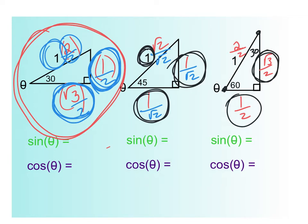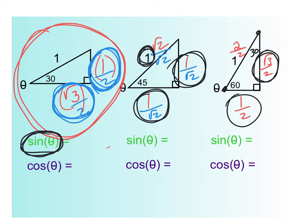Now that we've got all of these done, the actual questions become super easy. What is the sine of this angle? Sine is opposite over hypotenuse. That's kind of cool — the hypotenuse is one, so when you do opposite over hypotenuse, it's just the opposite side. I can put one half over one, but why put over one? It's just one half. Cosine is adjacent over hypotenuse, which is root three over two over one — which is root three over two. That's why we converted these.